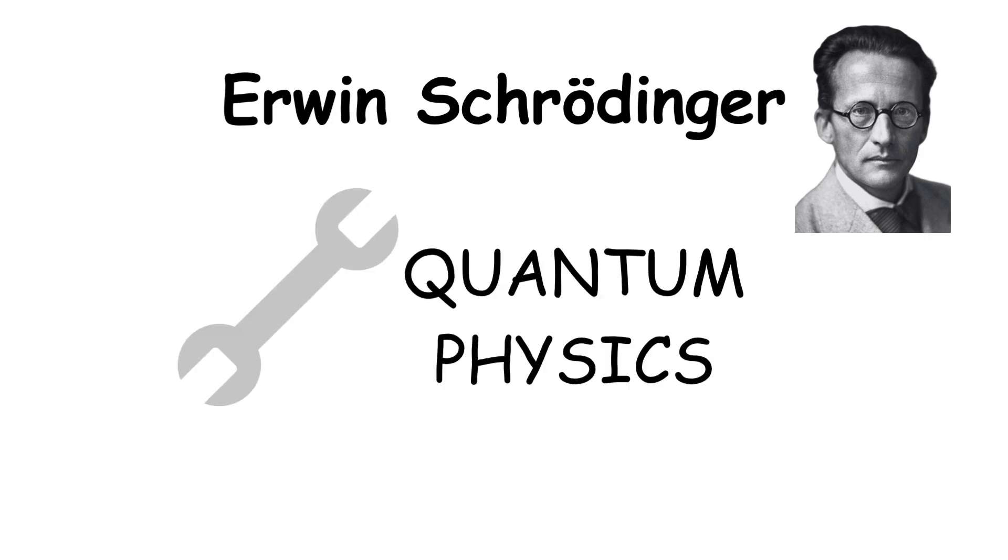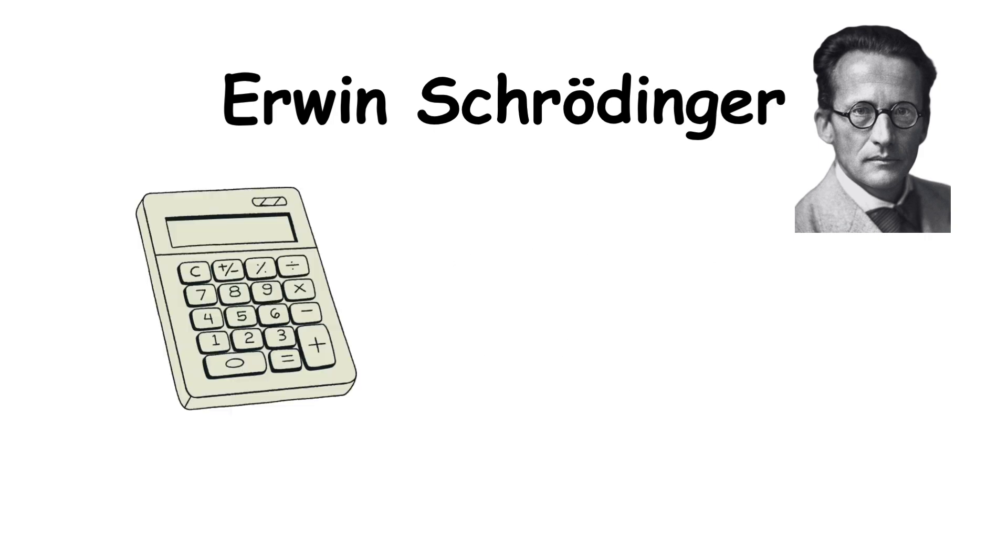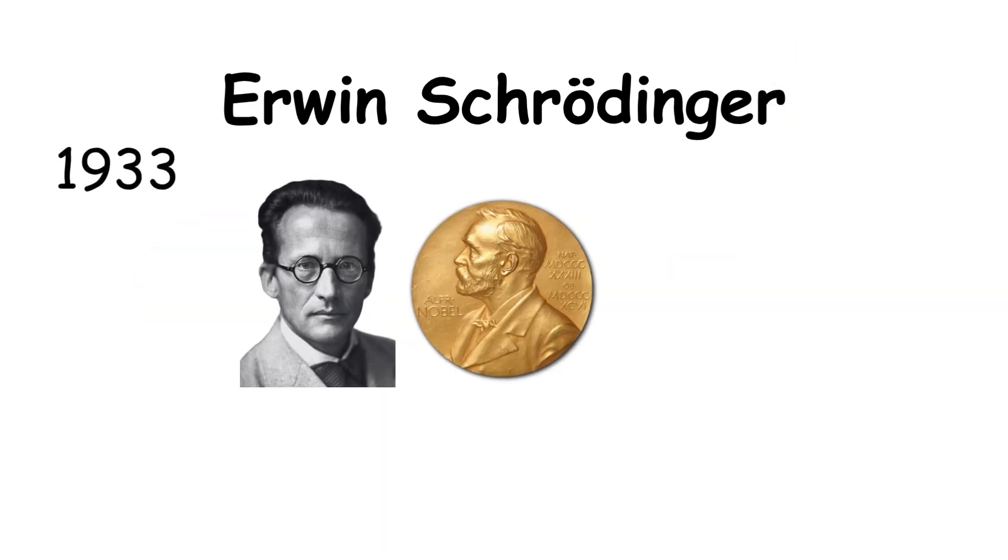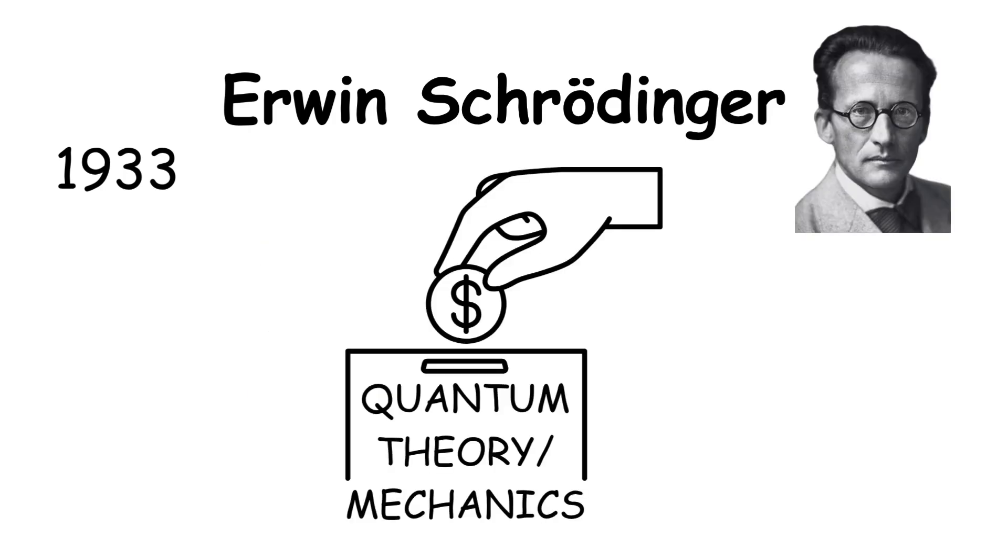It's used to calculate how systems evolve over time. He shared the Nobel Prize in physics in 1933 with Paul Dirac for their contributions to quantum theory.